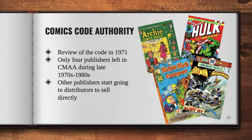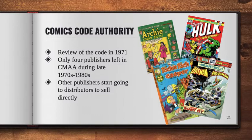In 1971, Marvel requested permission from the Comics Magazine Association of America to publish a special issue series of Spider-Man with a story arc about drug abuse. Its request was denied, but it did trigger a review. At that point, only four publishers remained members: Archie, Marvel, Harvey, and DC. At the 1971 review, they agreed to relax the ban on crime, but decided that 'horror' and 'terror' still couldn't be used in titles. They also added a section about how to handle depiction of drug use.